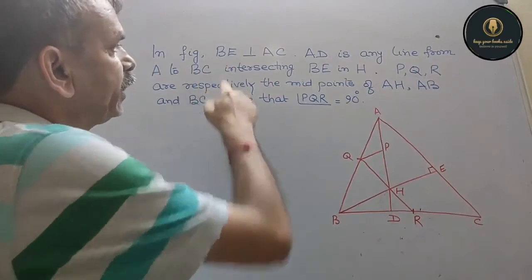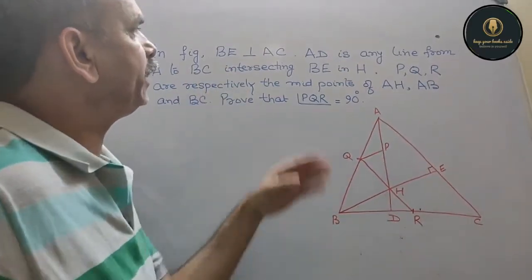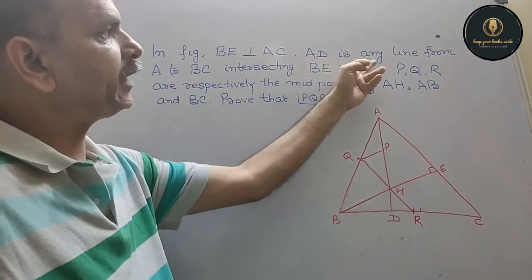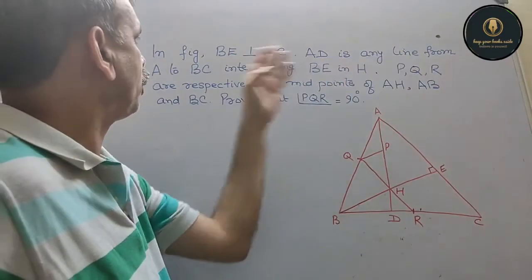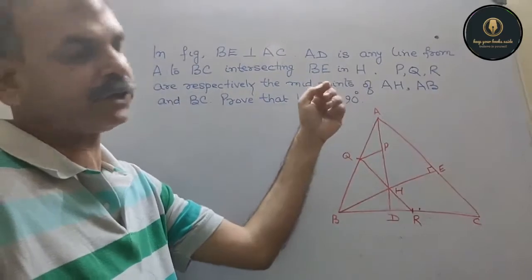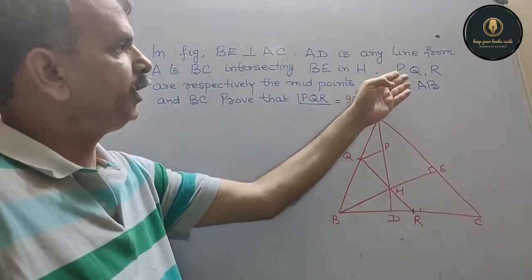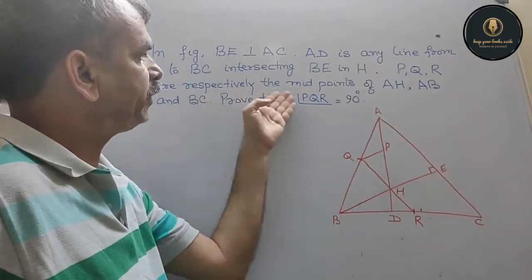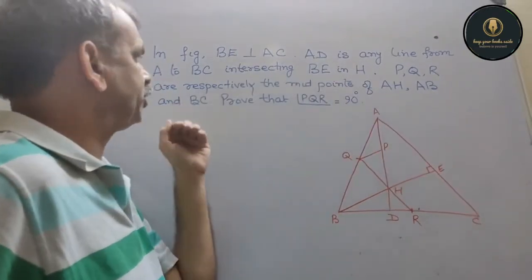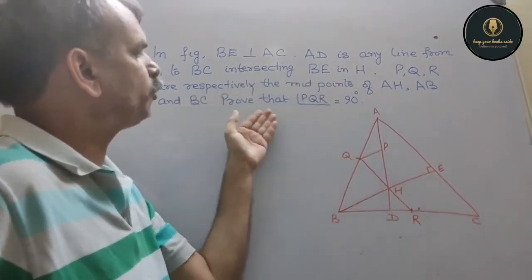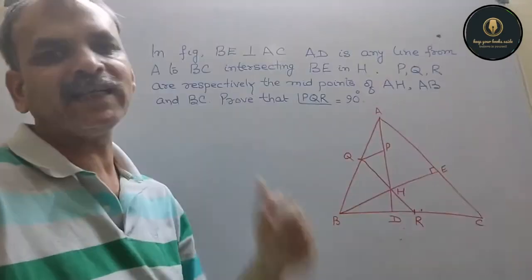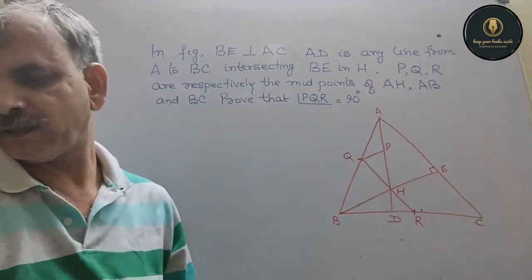In the figure, BE is perpendicular to AC. AD is any line from A to BC intersecting BE at H. P, Q, R are respectively the midpoints of AH, AB, and BC. Prove that angle PQR is equal to 90 degrees.